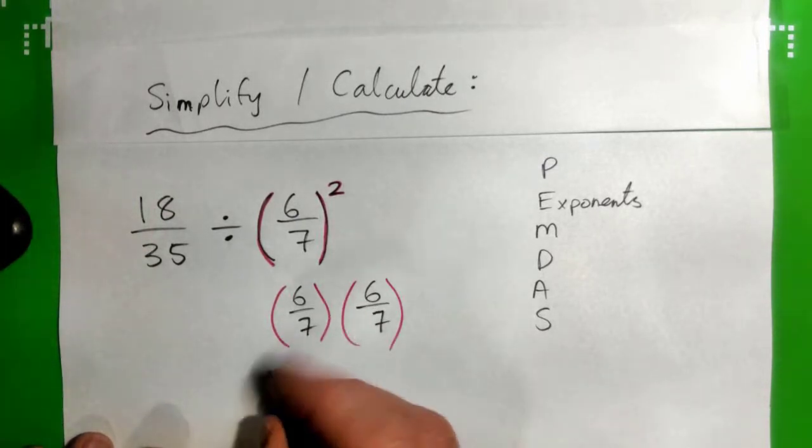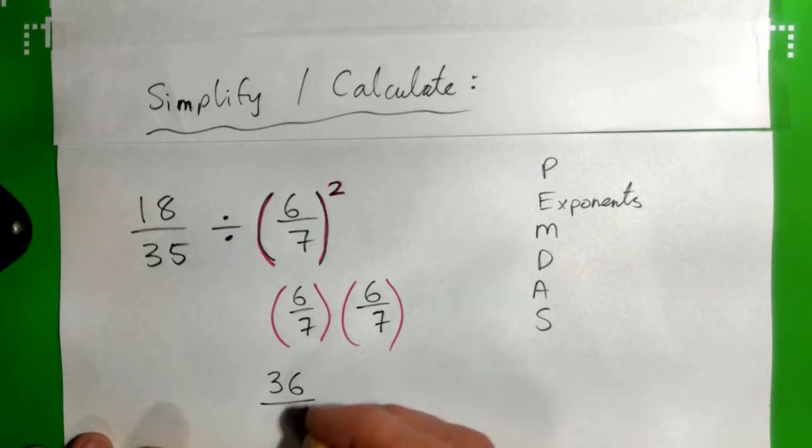Six times six, thirty-six. Seven times seven, forty-nine.